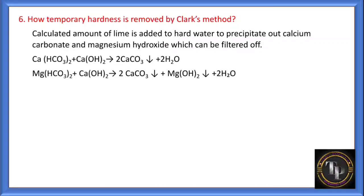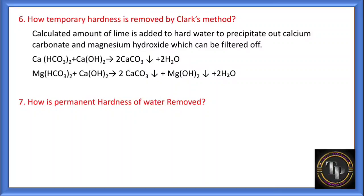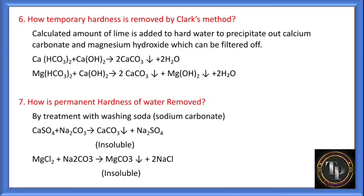How is permanent hardness of water removed? Four methods: treating with washing soda, the synthetic resin method (ion exchange method), the zeolite method, and Algon's method. Using washing soda: sodium carbonate (Na2CO3) is commonly known as washing soda. Hard water containing calcium sulfate, calcium chloride, magnesium sulfate, or magnesium chloride is treated with washing soda. This causes calcium carbonate or magnesium carbonate precipitate to form, which is removed, making the water soft.